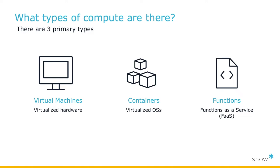Virtual machines, containers, and functions are the three primary compute options available today in the public cloud. These three options have significantly changed the way we approach modern application architecture and have really revolutionized how we treat the availability, scalability, and the cost of our applications in the cloud. As cloud practitioners, it's important that we understand what these three compute options are and that we're aware of the relative advantages and disadvantages of each.